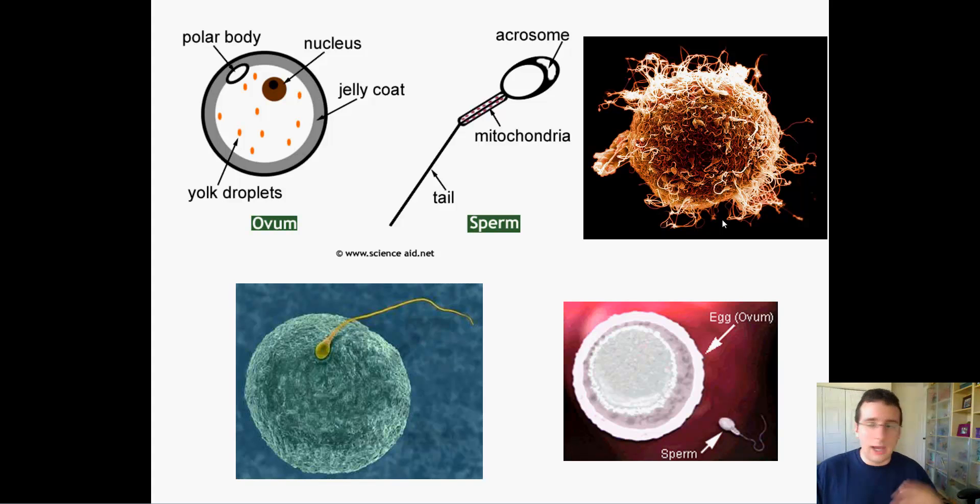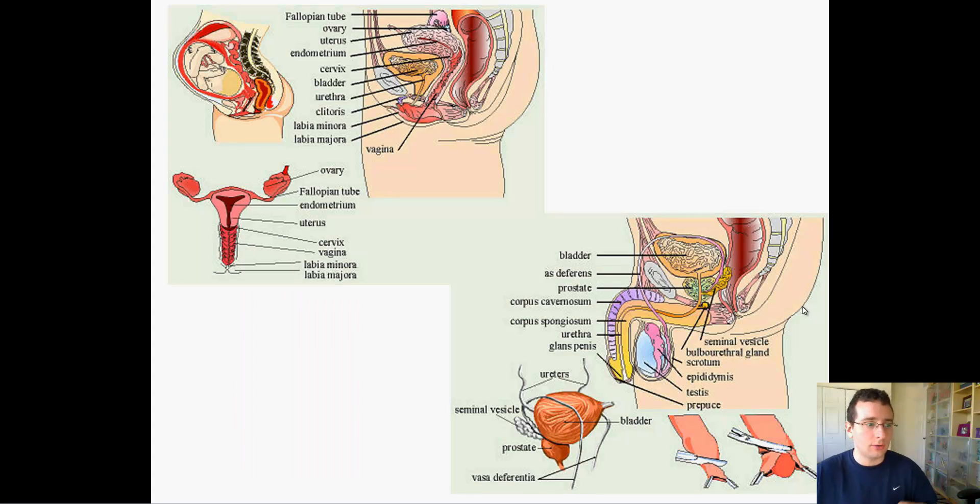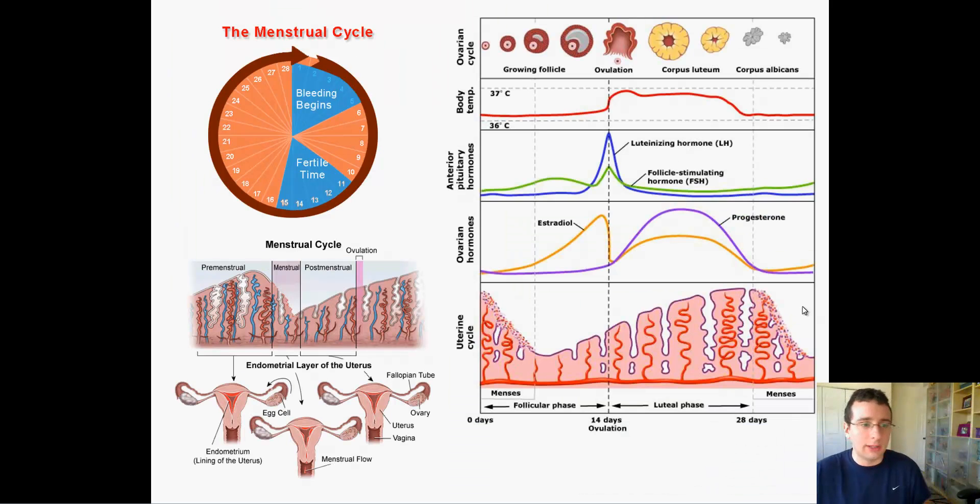You have to know the difference between an egg and a sperm and the processes that make them. You have to know what fertilization is, what implantation is. You have to know the basic differences between male and female anatomy, but not too much in detail. We do that in the anatomy quiz, so don't worry about that for now.